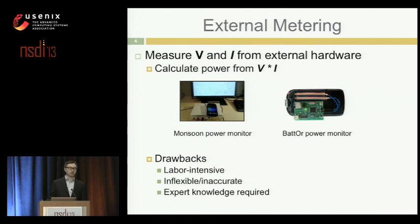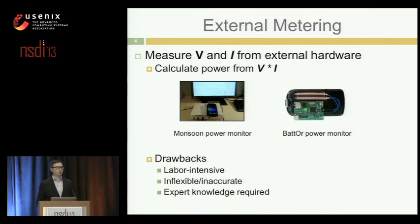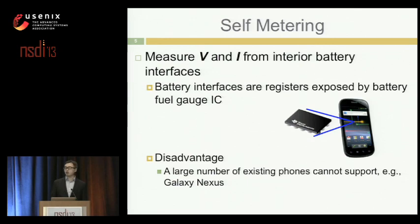External metering is usually done in a lab and is labor-intensive. You need expert knowledge to install those devices, and right now some phones use non-replaceable batteries, making it very hard to install such devices on smartphones. So people came up with a new solution called self-metering, which provides voltage and current information from internal battery interfaces — hardware inside the phone that can provide this information to the operating system and applications.